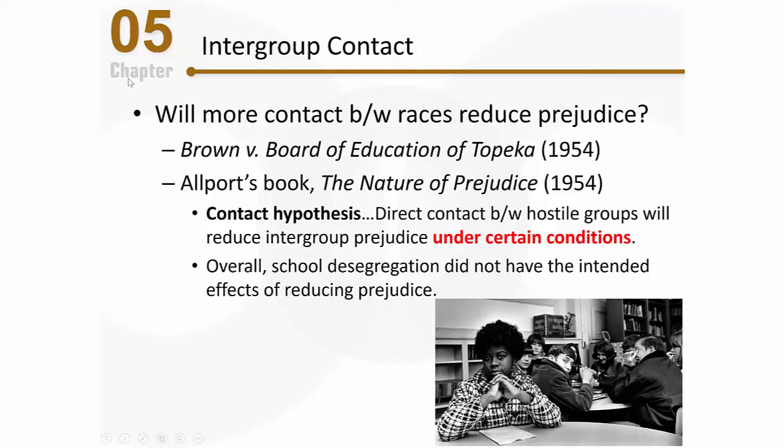But remember, it only works under certain conditions. Researchers got savvy and decided to look around, because not all school districts are the same. They realized that some school districts did have a lot of promising results, and they wanted to see what it was about those school districts — what did they do that led to success. They found that in those schools, contact was effective for reducing prejudice when four basic conditions were met.